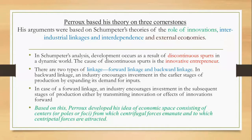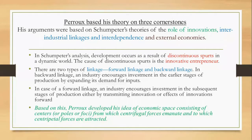According to Perroux, development occurs because of discontinuous spurts. Discontinuous spurts means suddenly there might be certain innovative industry — it is not a continuous process where zone A develops so zone B and C also develop. Maybe only in one zone it has developed within a region. That is called discontinuous spurts — spurts means sudden.